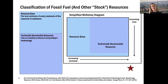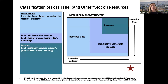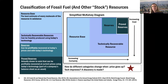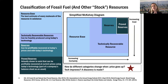A subset of the resource base is the technically recoverable resource — how much we can actually get at with today's technology, which can change as technology improves. Then there's the economically recoverable reserves: what we can extract at a profitable level with today's prices and technology. The final and smallest piece is proved reserves — what companies can actually add to their balance sheet, closely monitored, requiring an existing well or mine to prove those reserves can be recovered at current prices.